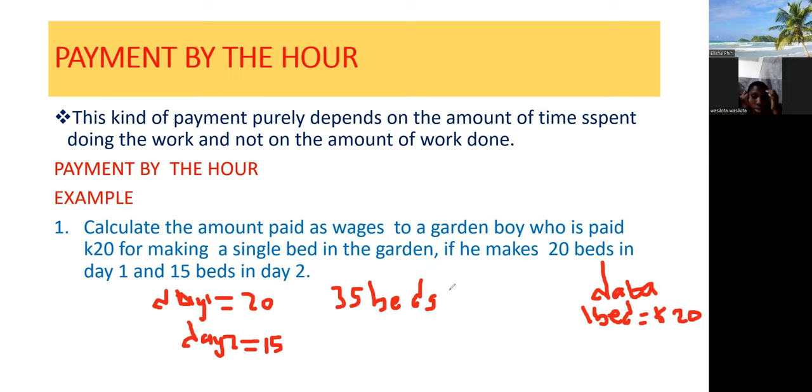So now the question is, how much was he given as his wage? So here, we're going to say we don't know how much he walked away with after making those five beds. But we know that one bed is equal to 20 kwacha. So it's just a matter of cross multiplying here. So 20 times 35, which is equal to 1 times X, that's X. So now the answer is 20 times 35, what do you get? That's 700.